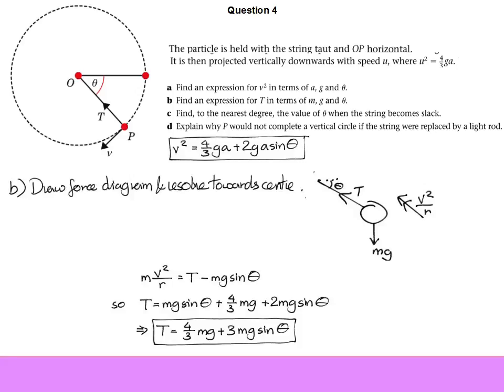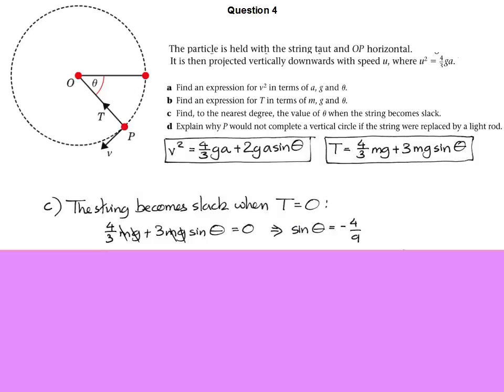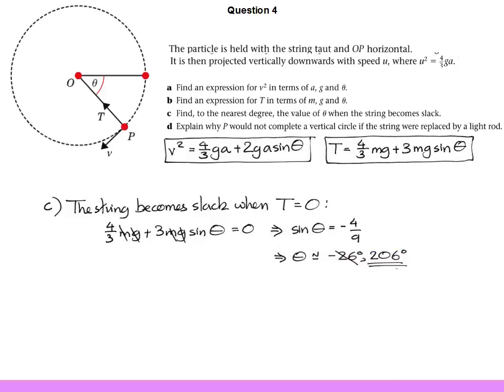So now we've done those, we've got an expression for velocity, we've got an expression for tension, and we can start to use these two to answer questions about the motion. So part C now. We need to figure out where the string becomes slack, and that, of course, is where the tension in the string equals zero. If we set the tension to zero, lots of things cancel out and we get a nice value for the sine of the angle. Take the inverse sine. There's a couple of sensible values. If you do it in the calculator, it'll probably give you the negative value, but we want to figure out how far it's actually moved, so we need to take the next value up, which is 180 plus 26, which is 206 degrees. So that's how far it managed to travel before the string became slack.